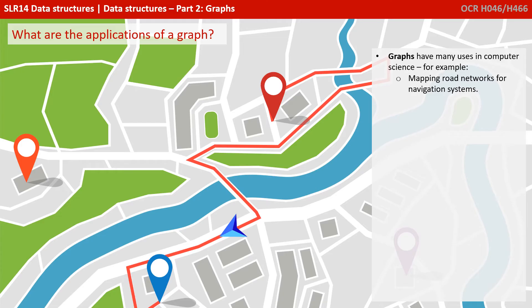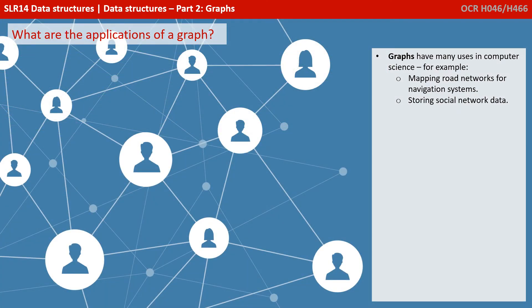Graphs have many uses in computer science, for example mapping road networks for navigation systems, storing social media network data.